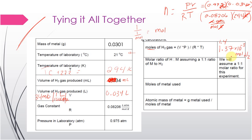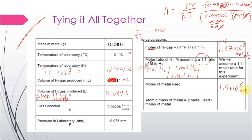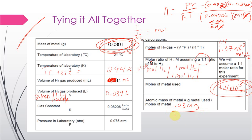Now use that ratio to find the moles of metal. For this pre-lab question, we tell you to use a 1-to-1 ratio: every time we have 1 mole H2, there's 1 mole of metal. So 1.4 times 10⁻³ moles H2 divided by 1 times 1 gives you that same number in moles of metal. To find the molar mass — grams per mole — take the mass you weighed out, 0.0301 grams, divided by 1.4 times 10⁻³ moles, giving approximately 21.5 grams per mole.